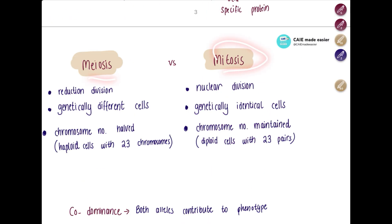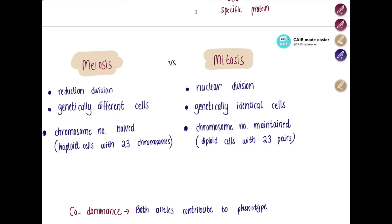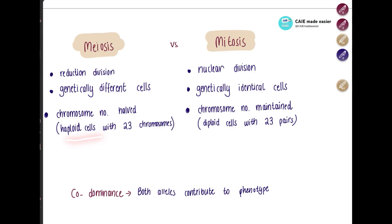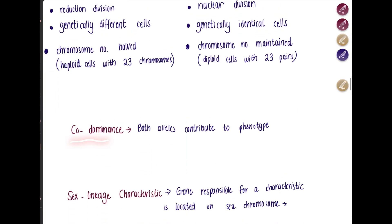The difference between meiosis and mitosis is very important — make sure you know the spelling and don't confuse them. Mitosis is a nuclear division used for growth and repair; the daughter cells produced are genetically identical and chromosome number is maintained at 23 pairs in human diploid cells. Meiosis is a reduction division used to create gametes — it produces genetically different cells because chromosomes are halved and we get a random combination of chromosomes from mom and dad.